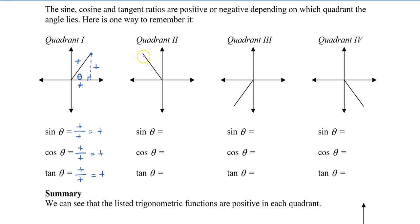Now let's take a look at the second quadrant. Draw the triangle to the x-axis and place theta on the bottom. Because the x-value is going in the negative direction, we place this as a negative value. The y-value is positive, and the radius is always positive. So sine theta is positive divided by positive — positive. Cos theta is adjacent, which is negative, divided by positive — negative. And tan theta is positive divided by negative — negative.